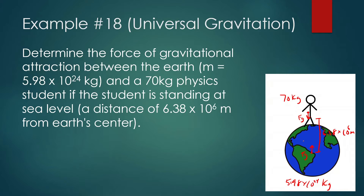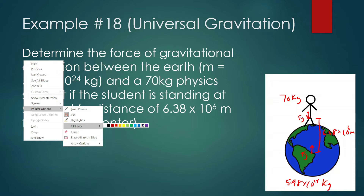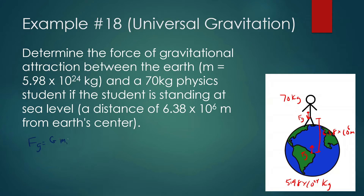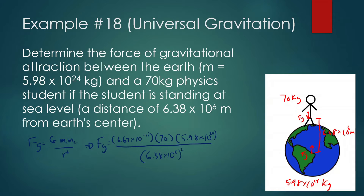Even though they experience the same force of gravity, the Earth doesn't really move because it has so much more mass than the physics student. We know force of gravity is equal to G × M1 × M2 / R². Force of gravity equals G, which is 6.67 × 10⁻¹¹, times M1 (the physics student, 70 kg), times M2 (mass of Earth, 5.98 × 10²⁴), all over how far they are from each other: (6.38 × 10⁶)². Make sure when you're doing this you're plugging into your calculator correctly — take your time and simplify things as much as you can.